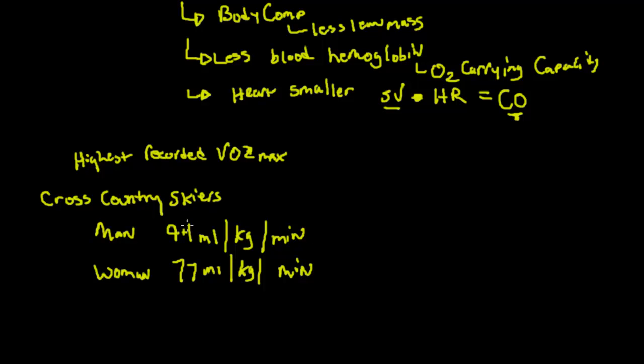This should make sense because these are cross country skiers. Not only do you have a lower body component to cross country skiing, but you also have an upper body component. So VO2 max is going to have to be extremely high compared to somebody running a marathon.